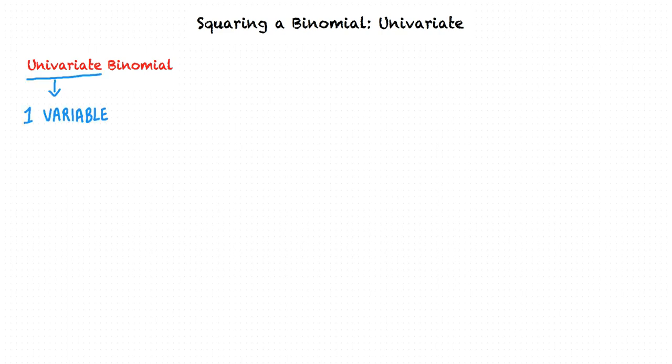This video will cover the topic of squaring a binomial univariate. A univariate binomial is an expression where the term univariate means there is only one variable, and the term binomial indicates that there are two terms.